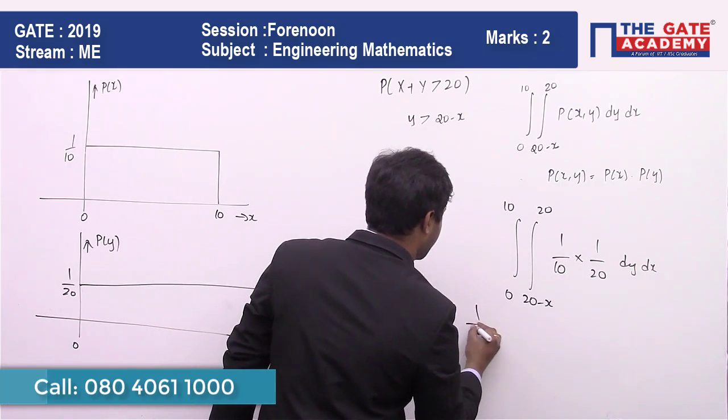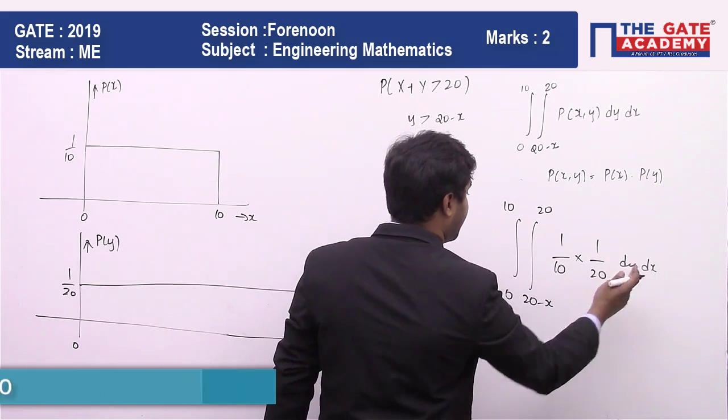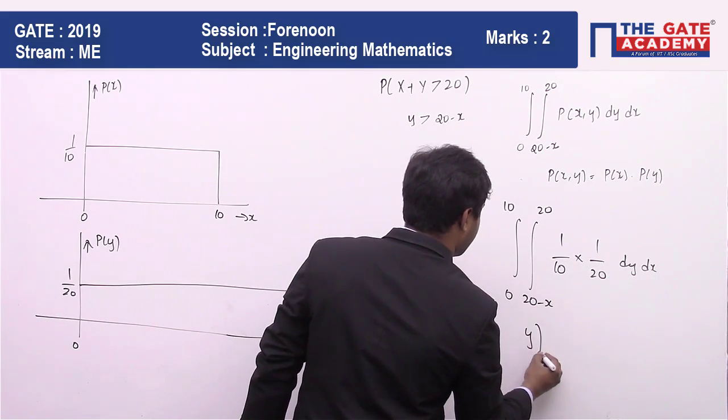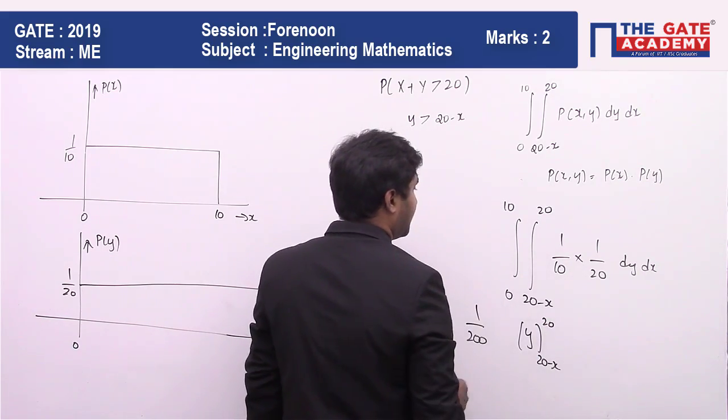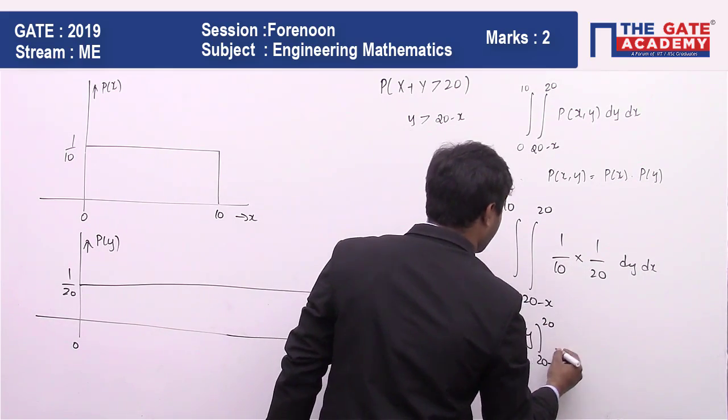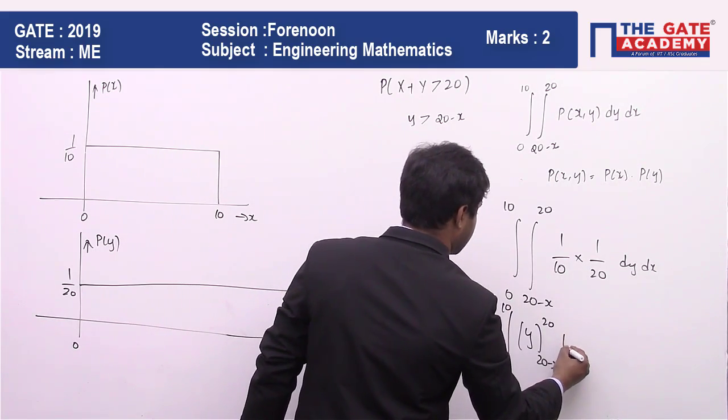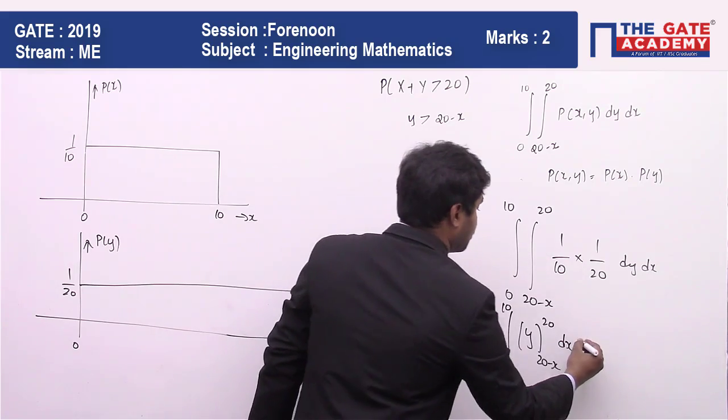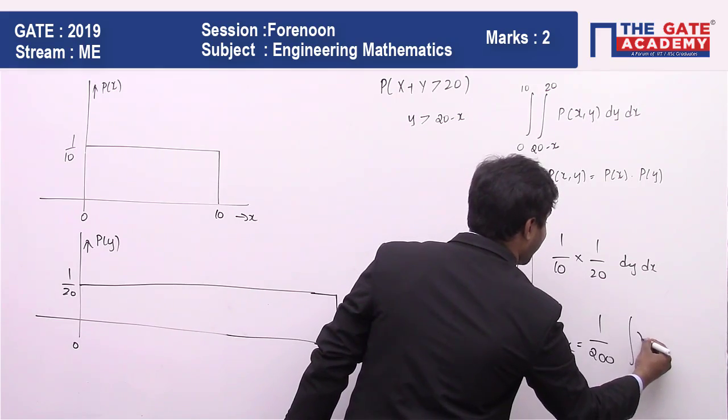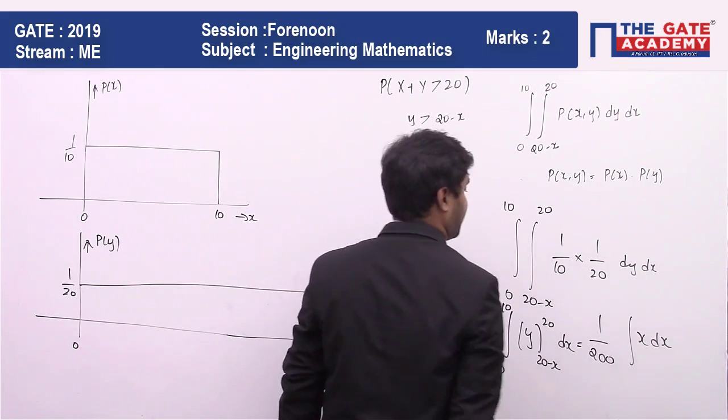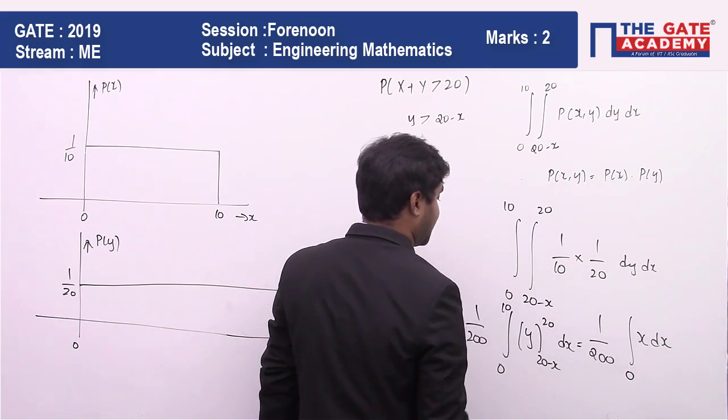So 1 by 200 comes outside and you are going to have integral dy which is equal to 20 minus x to 20, whereas x is going to range between 0 to 10 dx. So whose value is going to be 1 by 200. If I substitute, this is going to be integral of x dx where it is ranging from 0 to 10.